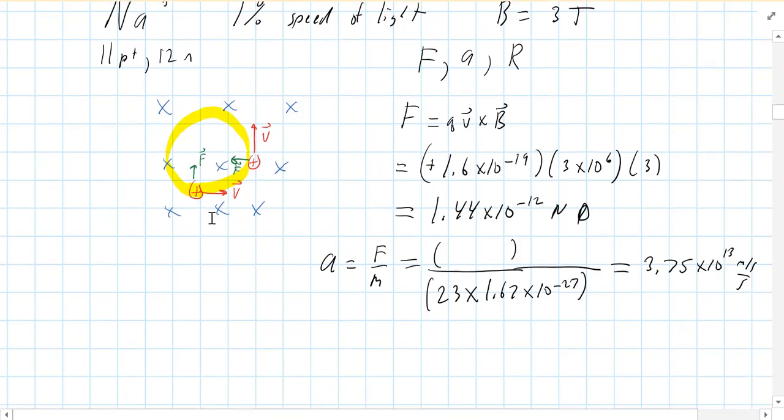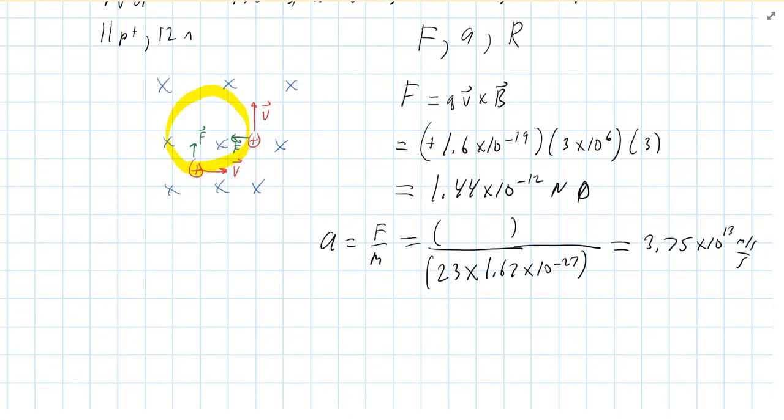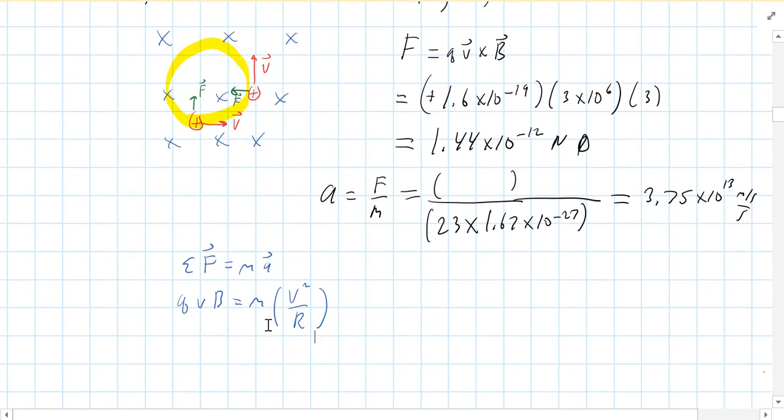What's the radius of the circle that he's going to make? So we know that net force equals MA. The force is QVB equals M. And then what's the acceleration of anything going in a circle? Well, that's just V squared over R. And that's where our radius comes into play.